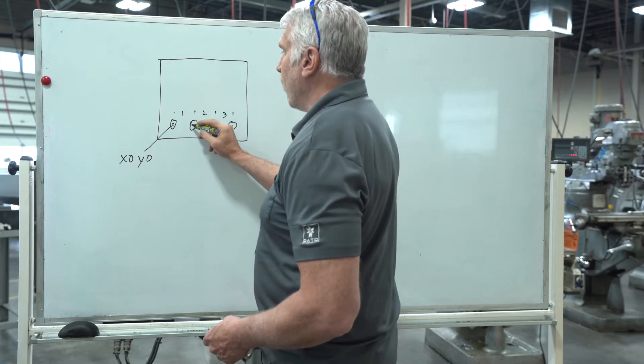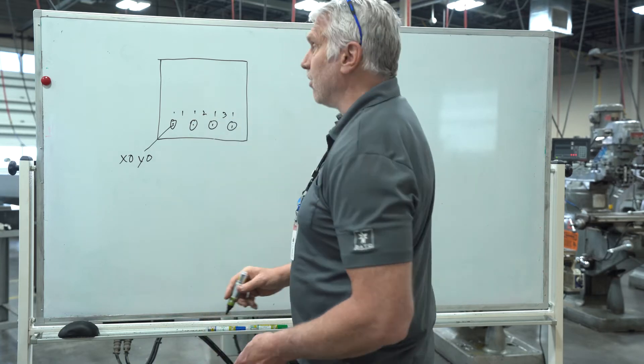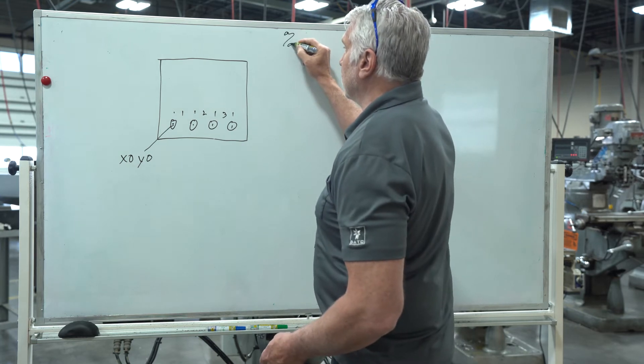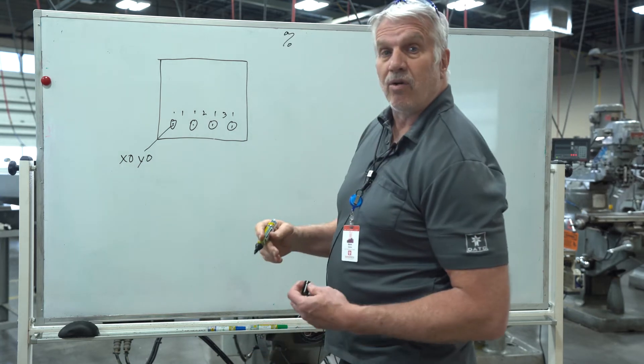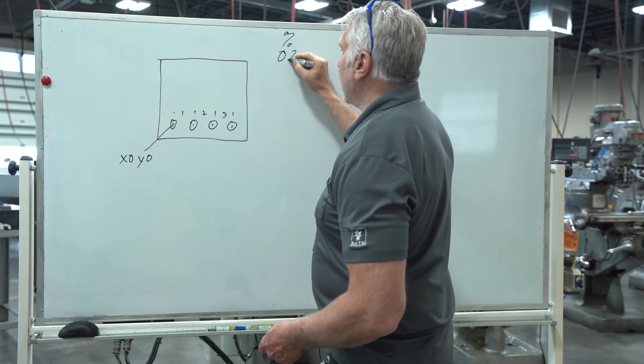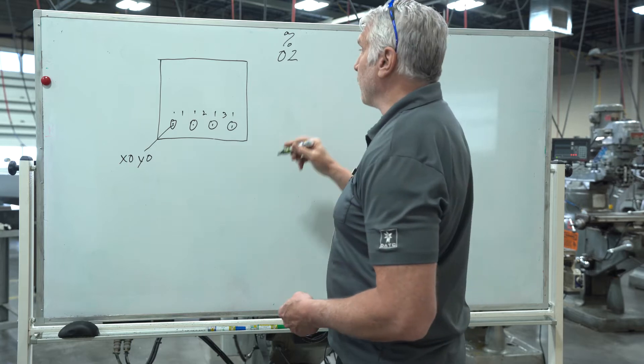So zero, one inch over, two inches over, and then three inches over for four holes. We start our program with the percent symbol. Then we're going to give our program a number. We're going to call it O and the number two. So this is our program that we're going to do.